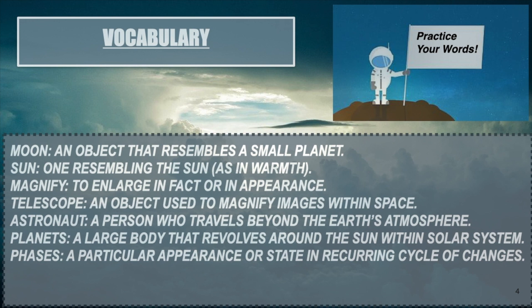If you take a look at our vocabulary for the week, you'll see that it focuses on items that you might see in the sky, whether during the day or at night. Our first word is moon. The moon is an object that resembles a small planet. Usually when we see it in the sky, the moon goes through four different stages. I'm looking for a scholar that can tell me what those four phases might be — you might have to use your tablet or computer to figure that one out.